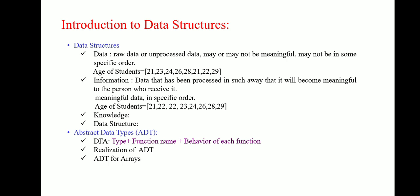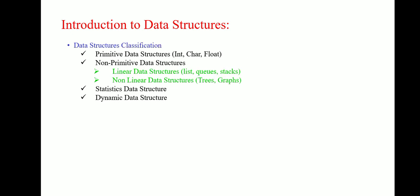Now here we consider the data structure. So data structure is already defined. Now there are two types of data structure which is called as the primitive data structure and non-primitive data structure. Again data structure is classified as static data structure and dynamic data structure. So primitive data structure consists of integer, character, float. Non-primitive data structure consists of linear data structure and non-linear data structure. Linear data structures are list, queues, and stacks, where non-linear data structures are trees and graphs.